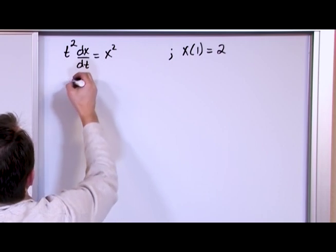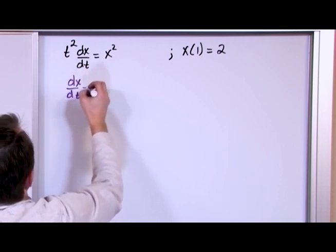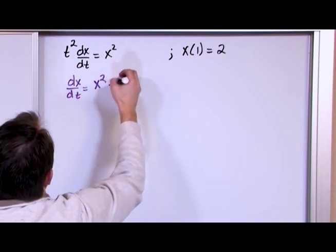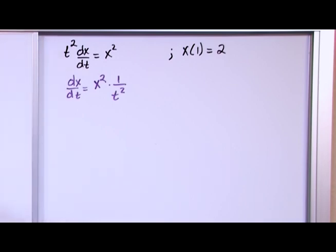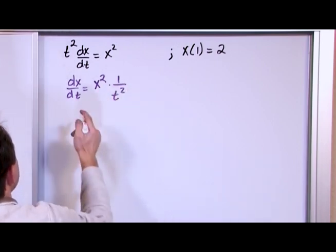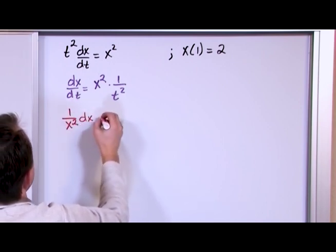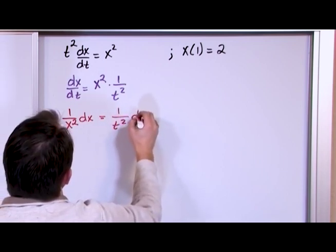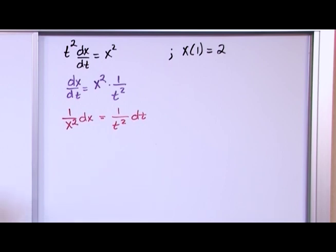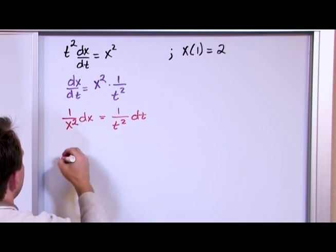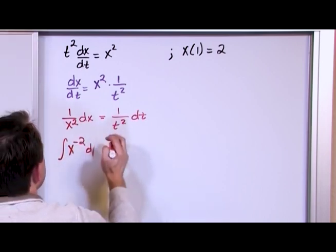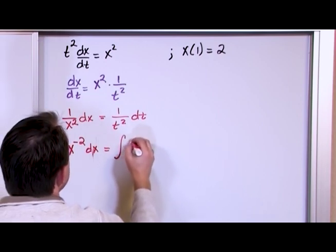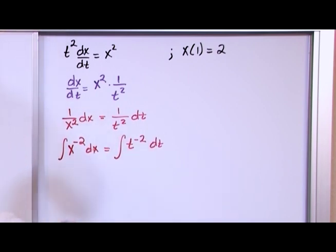One more problem, this time with an initial condition. The differential equation is t² times dx/dt equals x², and the initial condition is x(1) = 2 — meaning at time equals one, x equals two. Is it separable? Move t² over: dx/dt equals x² times 1/t². That's a function of x multiplied by a function of t, so yes it's separable.